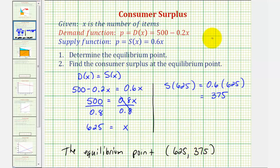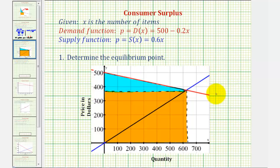So for the consumer surplus formula, capital Q is 625 and capital P is 375. Before we find the consumer surplus though, let's look at the graph of D(x) and S(x) on the coordinate plane. Here's the demand function and here's the supply function. We just found the equilibrium point, this point here, where the quantity is 625 and the price is 375 dollars.